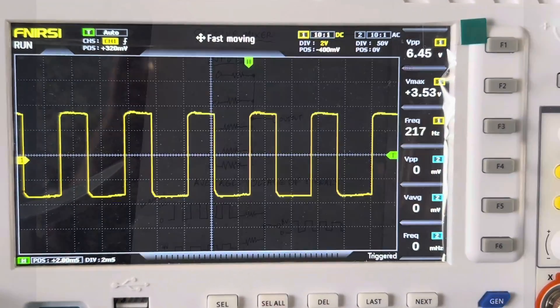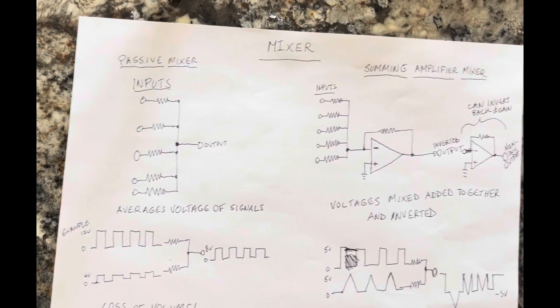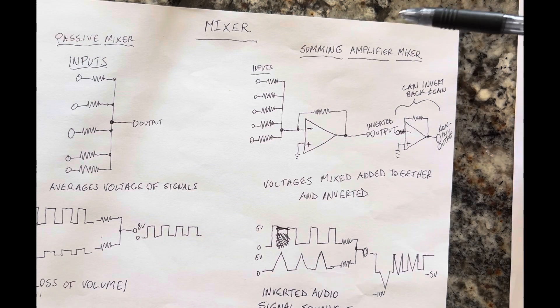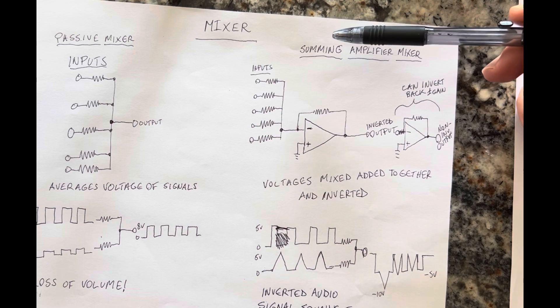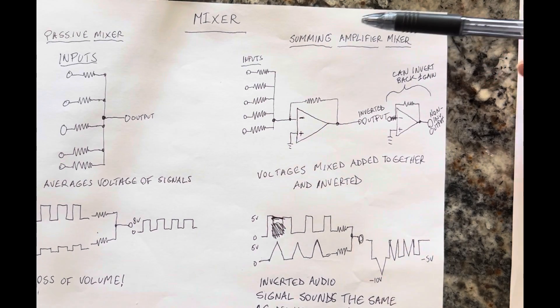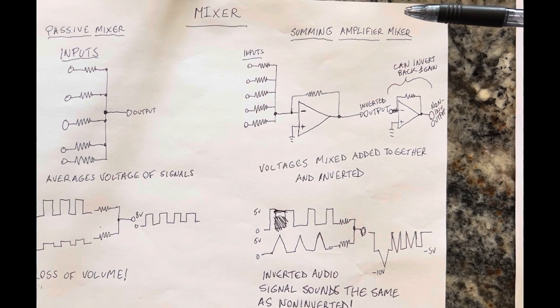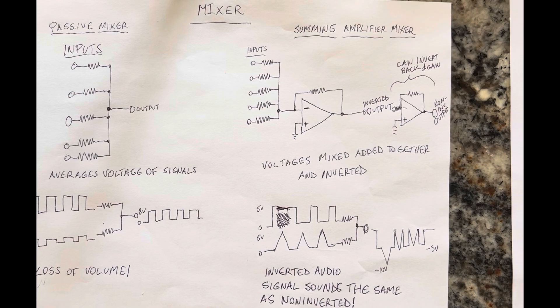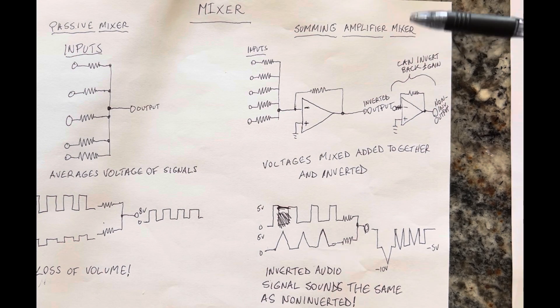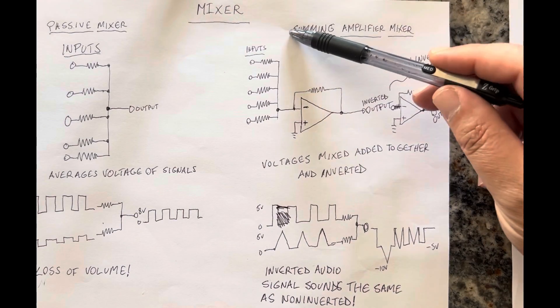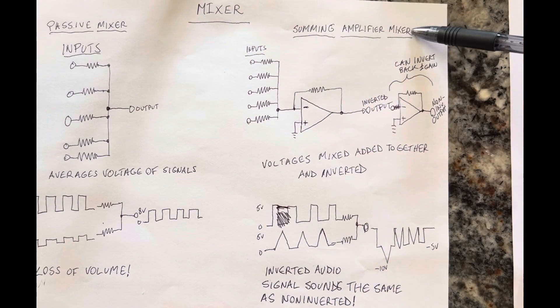So, let's see how we can fix that. A better way of doing it is using an op-amp as a mixer. And using the one principle of an op-amp that is really good is the fact that it does math. It's an operational amplifier. So when it's an operational amplifier, it does mathematical operations. A summing amplifier mixer.